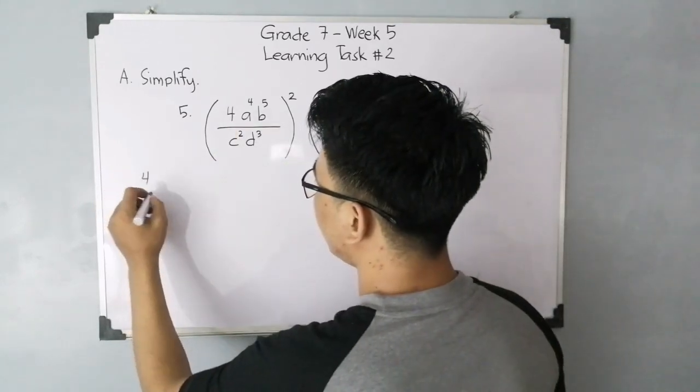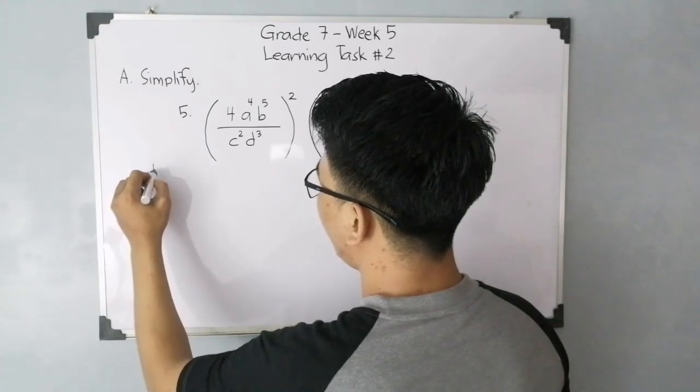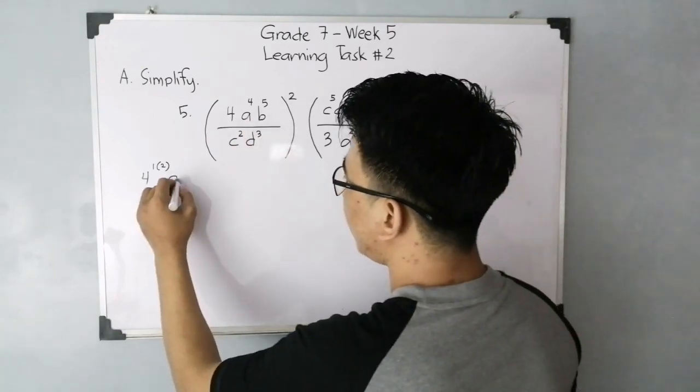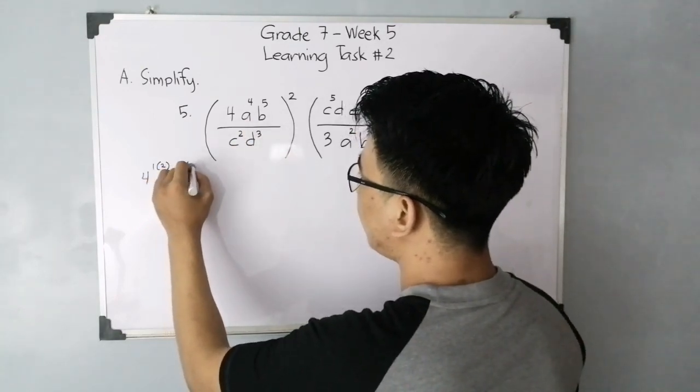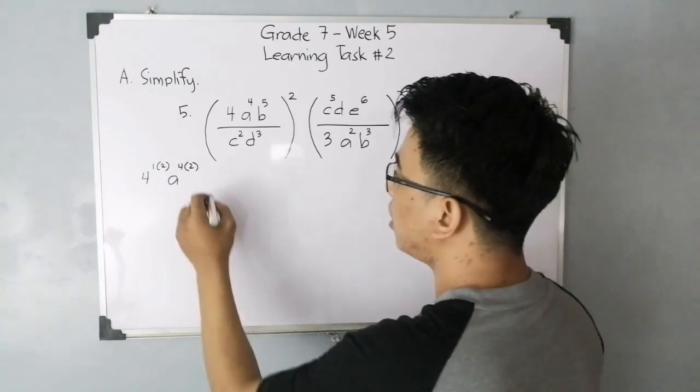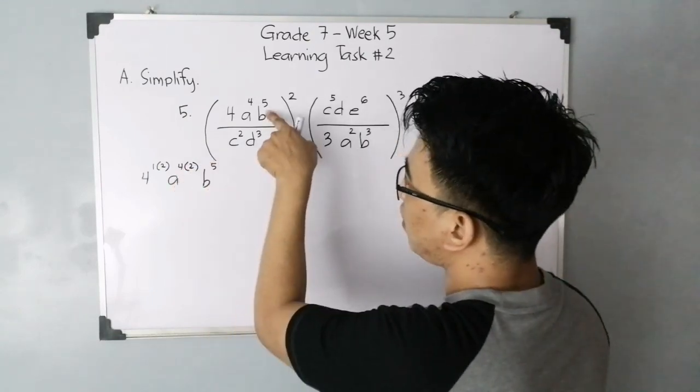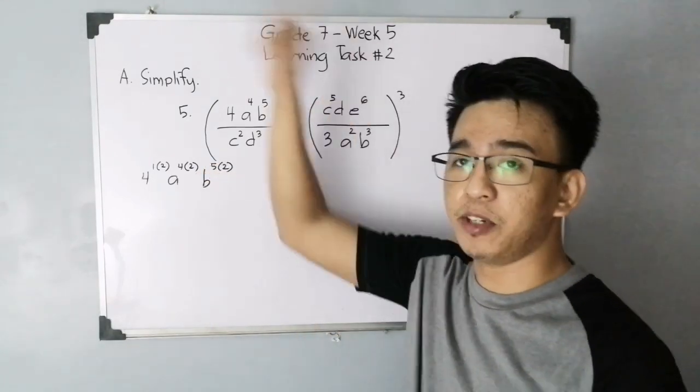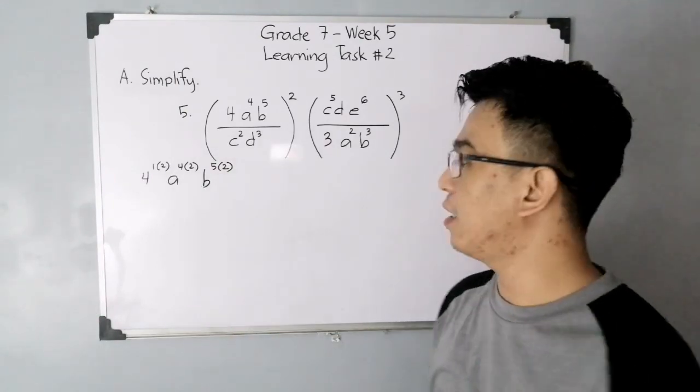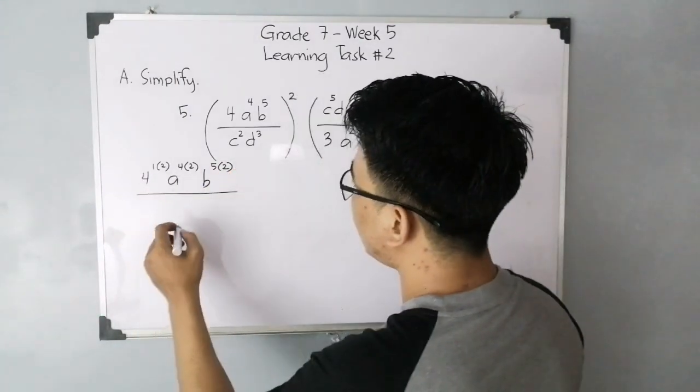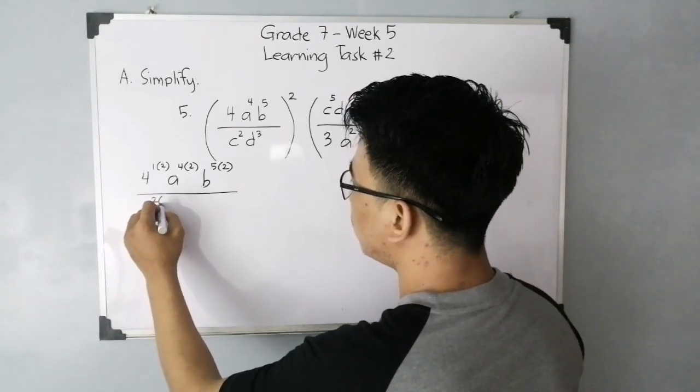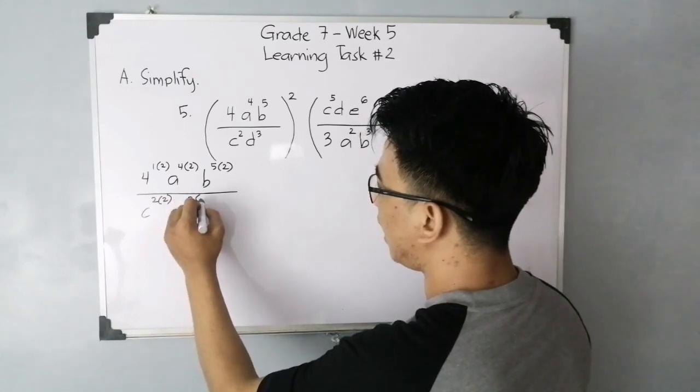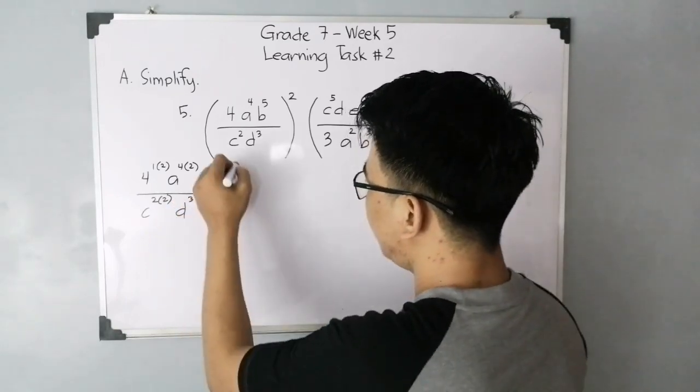Let's apply power of power. I said earlier in power of power, you need to multiply the exponents to our bases. Let's focus on this. For the base of 4, you have 4 raised to 1 times 2. We distribute the exponent. And then for the variable A, you have A raised to 4 times 2. For the variable B, you have B raised to 5 times 2. For example, where does the 2 come from? This is the exponent on the outside that we distribute one by one to the exponent of each base. Over, in the denominator, you have your C raised to 2 times 2, and then D raised to 3 times 2.